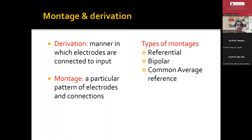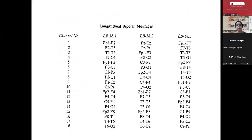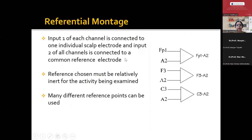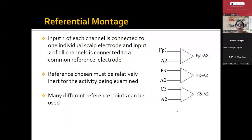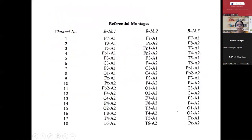Once we start recording, we should know about montages and derivations of the EEG. Derivation is the manner in which the electrodes are connected to the input. Montage is the particular pattern of electrodes and their connections. We have referential montage, bipolar montage, and common average montage. The longitudinal bipolar montage — the so-called double banana montage — is what we use very regularly. The referential montage has one electrode, usually A1 or A2, connected to all other electrode inputs. In the referential montage, localization is by amplitude — wherever it is maximum, that is the maximum surface negativity closest to the epileptiform activity.